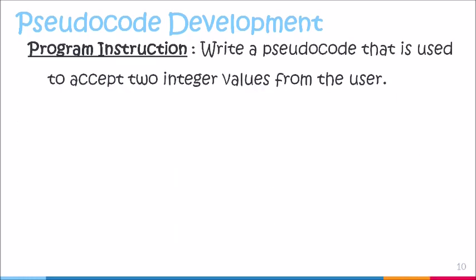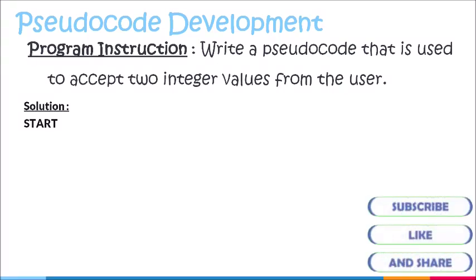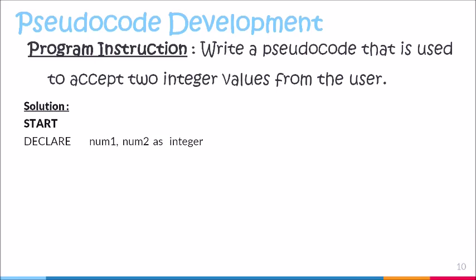Here we have another example which we will use to show all the stages completed so far. This example is asking us to write a pseudocode that is used to accept two integer values from the user. In our solution, the first thing we need to have is our keyword start, to indicate where program execution begins. After start, we need to declare our variables that will be used within the program. Based on the instructions, two variables are being requested, and these two variables are to be of the data type integer. Here we have our declaration keyword declare, followed by the first variable name number one, the variable name number two, and these are both being declared as data type integer.